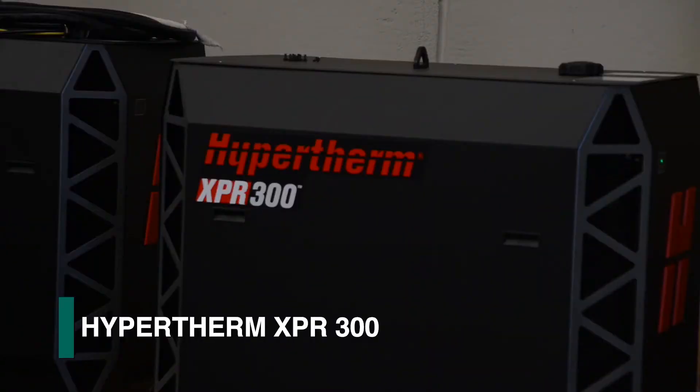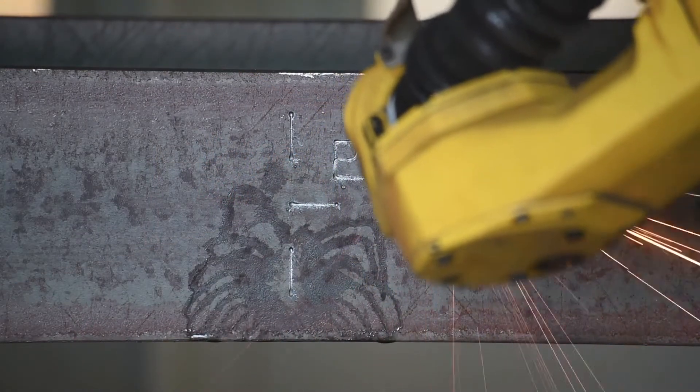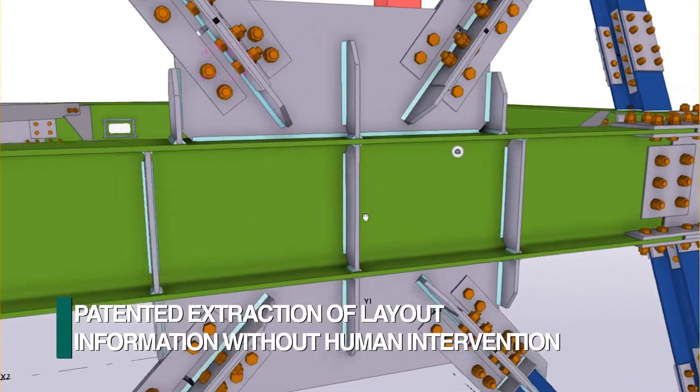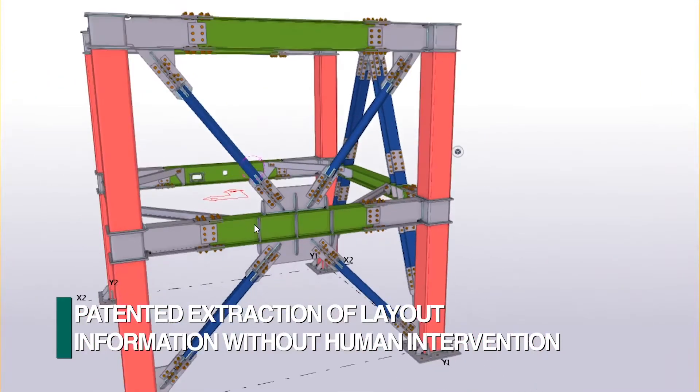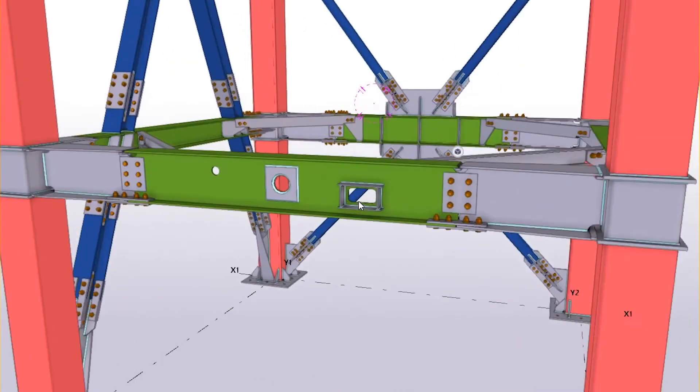The versatility of the Hypertherm XPR 300 plasma torch is demonstrated to automatically produce layout marks based upon the intersection of detail elements in the 3D model. This information is automatically extracted from the 3D model by VCHEP's patented process that generates the machine program to indicate all the layout information.